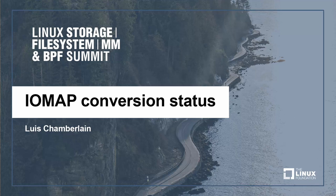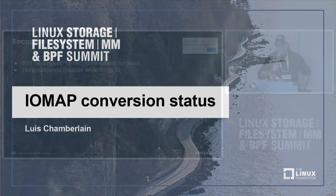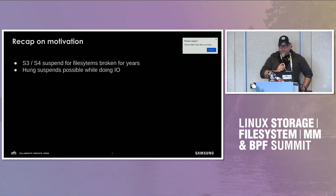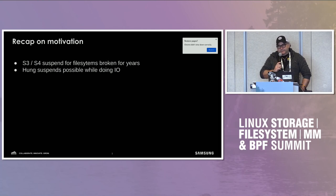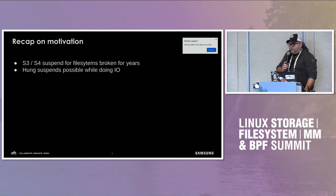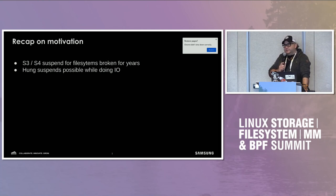I'm just going to recap briefly about the history because I like this to be more about a dialogue. The original motivation for this is to actually get S3 and S4 to suspend for file systems that have been actually broken for years. It might come as a surprise to some folks that file system freezing is broken, but it actually is pretty broken, and has been for years. The problem really stems from the fact that we don't have a unified way to automatically freeze file systems when we're going to suspend or hibernate.